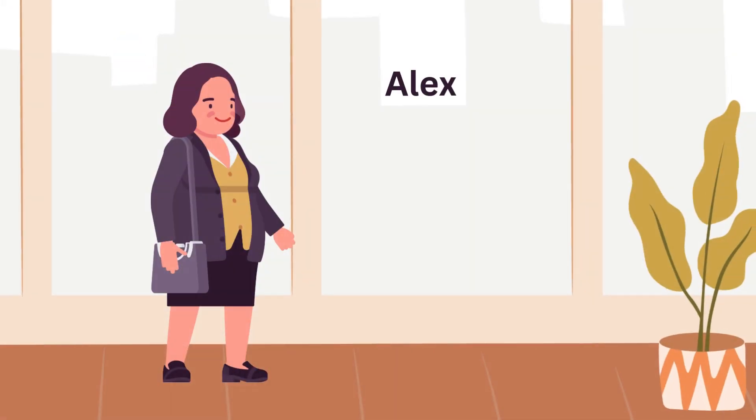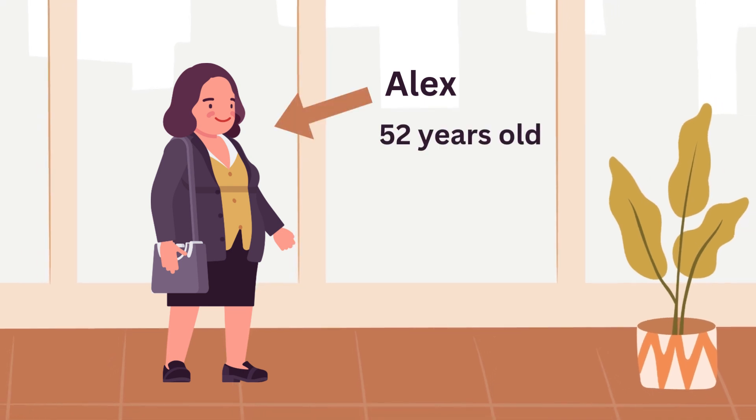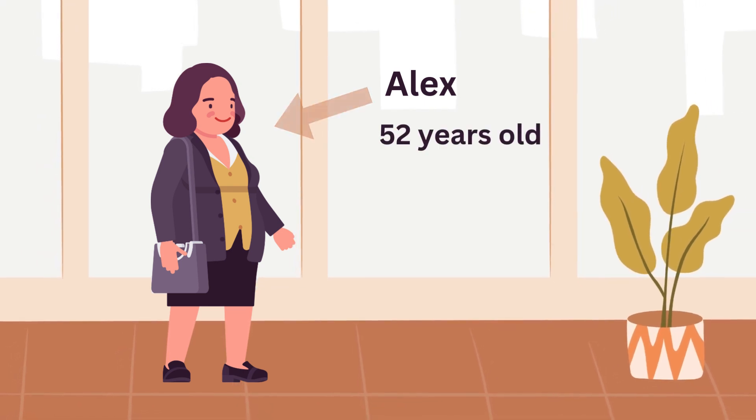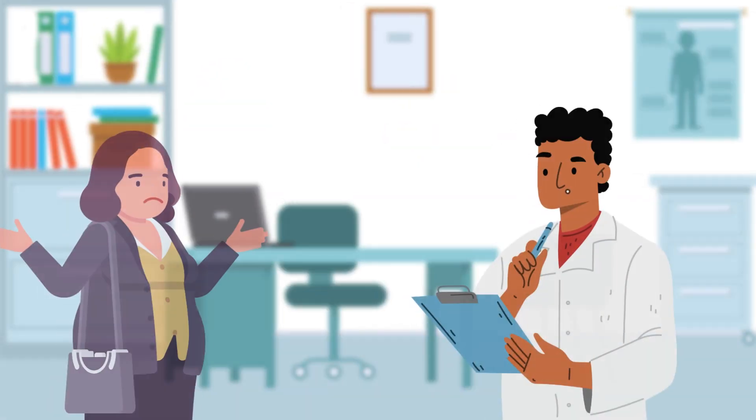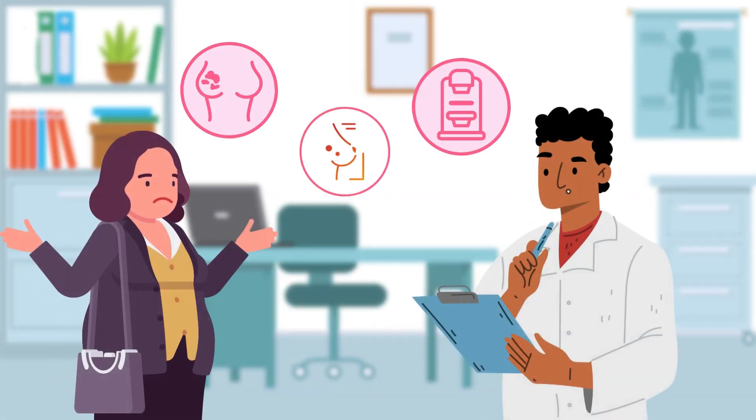Meet Alex. She's 52 years old and has been battling breast cancer for several years. Four years ago, Alex found a suspicious lump in her breast. It turned out to be cancerous, so Alex had surgery to remove the small tumor but decided not to undergo any other treatments at this time.